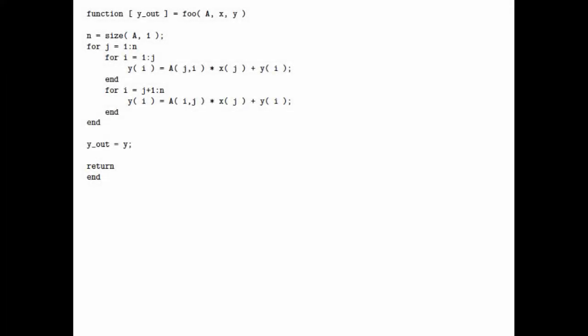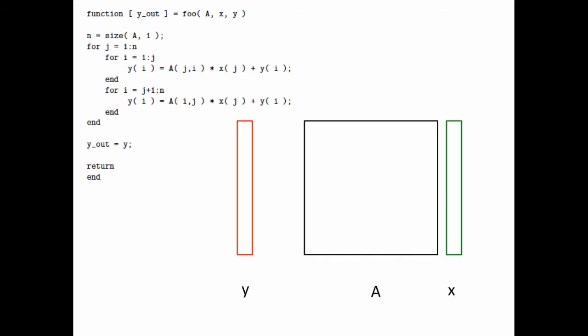So here we have the algorithm and I decided to get fancy and use PowerPoint to create an animation. So what we have is a matrix A, a vector x, and a vector y. Now, we're going to add to vector y, so we're going to indicate that with the plus equals here.